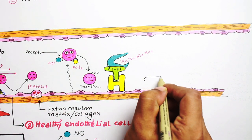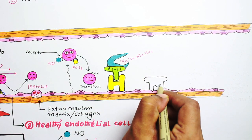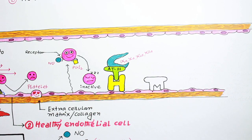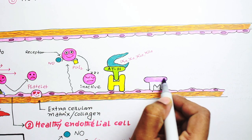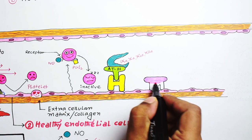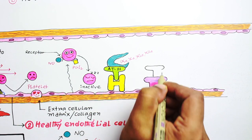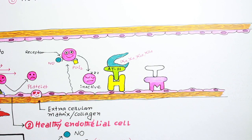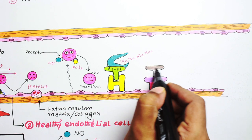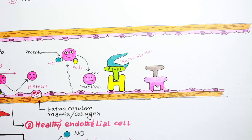Now another molecule expressed by endothelium is a modulator molecule. As you know, normally thrombin acts as a coagulant protein, but if it binds with this molecule, they modulate the function of the thrombin molecule. That's why this molecule is named thrombomodulin.